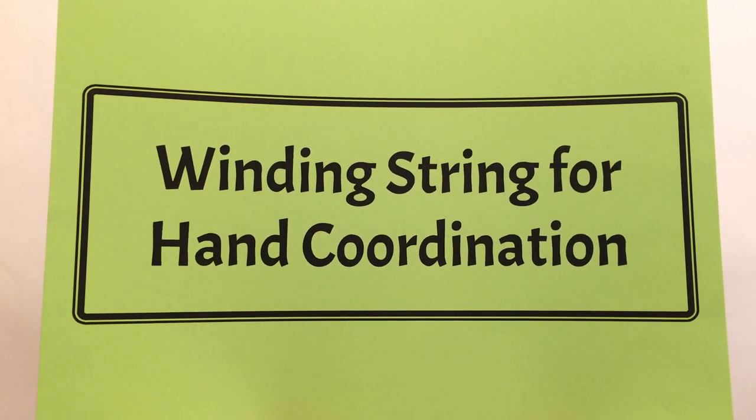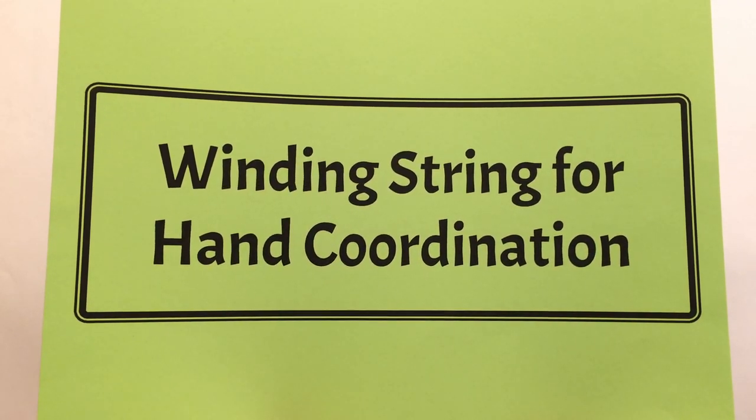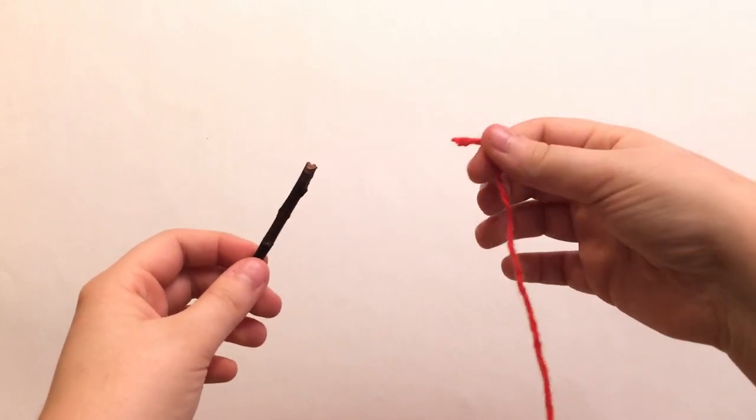You can help a child improve their eye-hand coordination by doing a winding activity. For this activity, all you need is a short little stick and a longer piece of string.